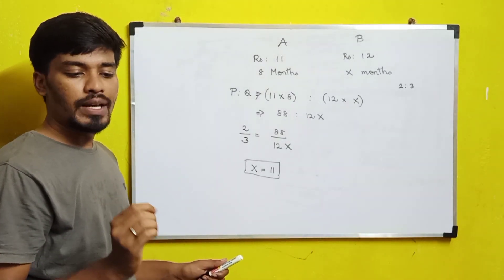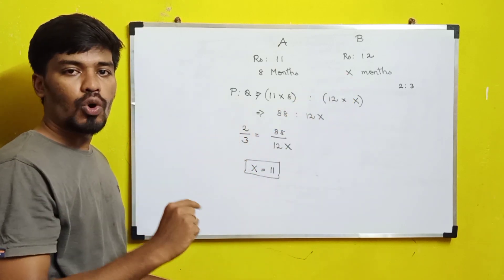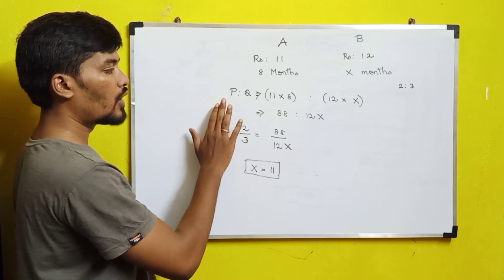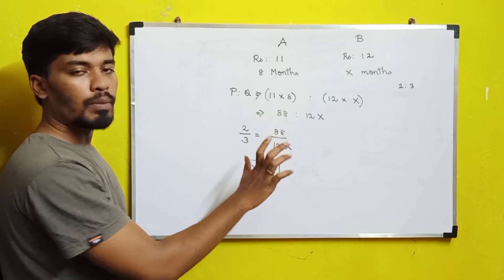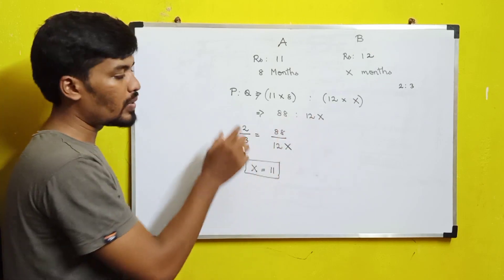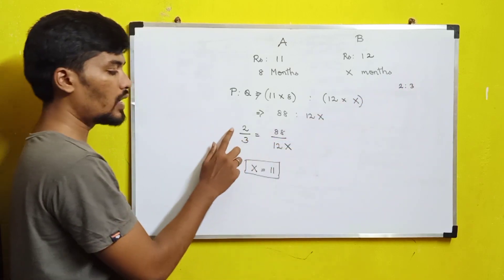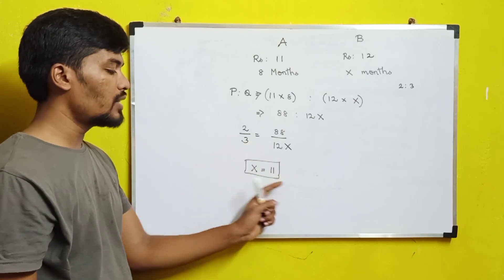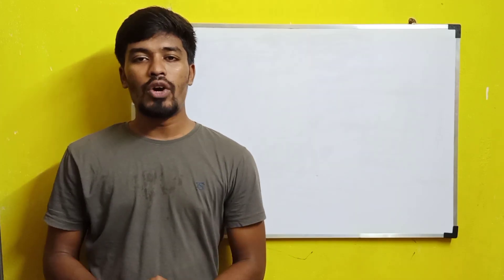We use the formula: ratio of investment = ratio of profit. So P : Q = (amount × months), giving 11 × 8 : 12 × x = 88 : 12x. Setting this equal to the profit ratio 2 : 3, we get 2/3 = 88/12x. Cross-multiplying and solving for x gives x = 11. So B invested his money for 11 months.